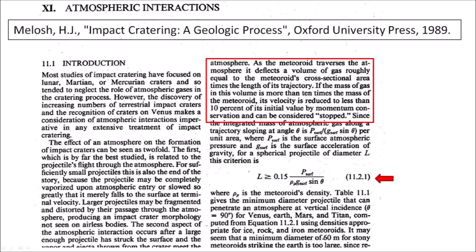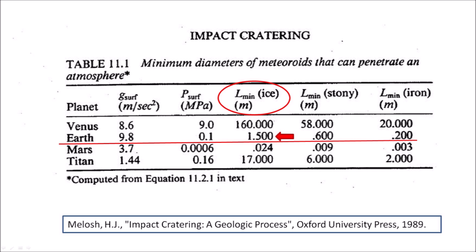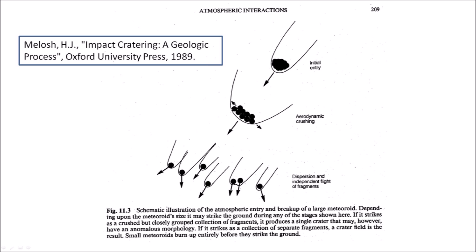At that point, it will just drop toward the ground at terminal velocity. Professor Jay Melosh includes a table where he has calculated that pieces of ice as small as 1.5 meters in diameter could traverse the Earth's atmosphere. The table also includes the minimum diameters of stony and iron meteoroids that can penetrate an atmosphere. One of the figures in Professor Melosh's book shows the atmospheric entry and breakup of a large meteoroid. Depending upon the meteoroid's size, it may strike the ground during any of the stages shown. If it strikes as a crushed but closely grouped collection of fragments, it produces a single crater that may have an anomalous morphology. If it strikes as a collection of separate fragments, a crater field is the result. Small meteoroids burn up entirely before they strike the ground.